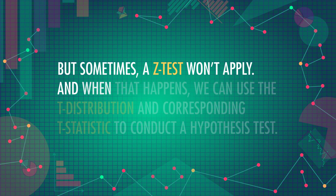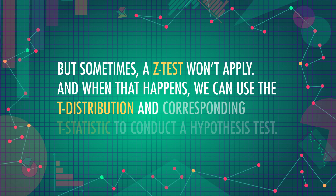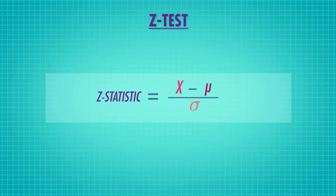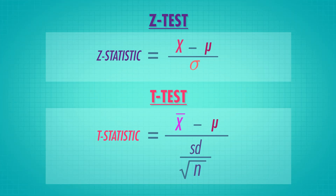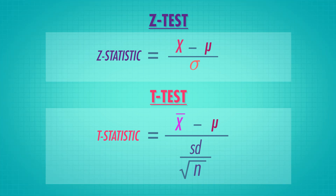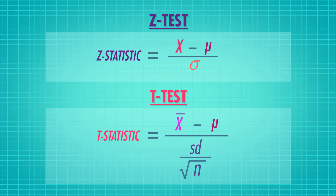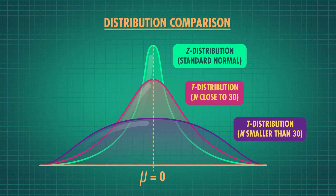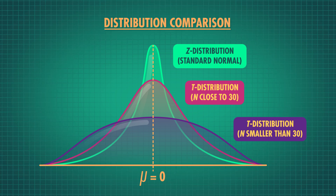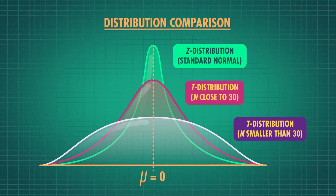But sometimes a z-test won't apply. When that happens, we can use the t-distribution and corresponding t-statistic to conduct a hypothesis test. The t-test is just like our z-test — it uses the same general formula for its t-statistic. But we use a t-test if we don't know the true population standard deviation. It looks like our z-statistic, except that we're using our sample standard deviation instead of the population standard deviation in the denominator. The t-distribution looks like the z-distribution, but with thicker tails, because we're estimating the true population standard deviation. Estimation adds a little more uncertainty, which means thicker tails, since extreme values are a little more common.